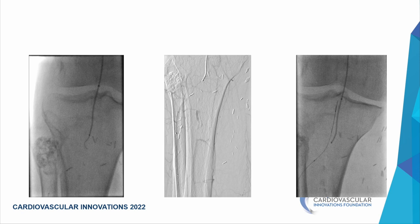We obtained sheathless retrograde access through the pedal vessel. Using 0.014 Command wire and 0.018 microcatheter support from retrograde, and a Navicross catheter antegrade, we eventually crossed retrograde from the AT up to the popliteal. The wires were next to each other but did not appear to be interacting.